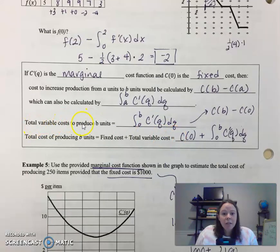And then the total variable costs to produce b units would be here. So that would be starting from zero to b.